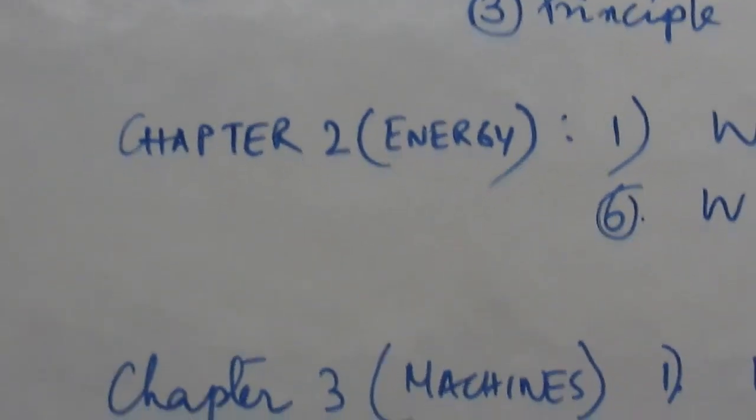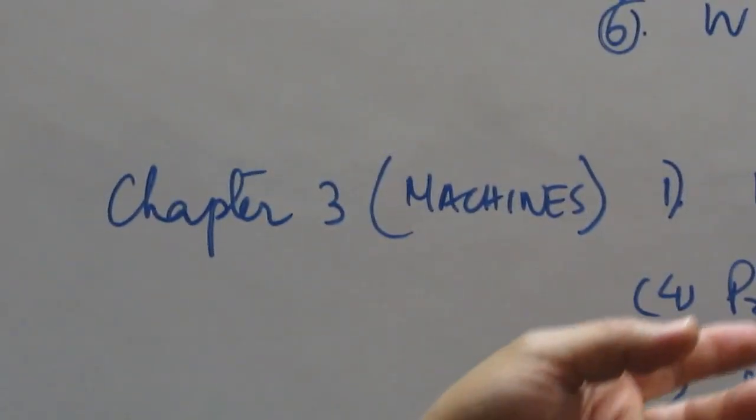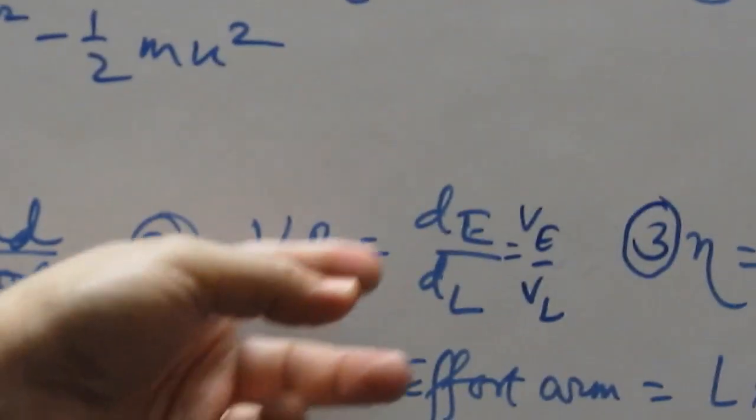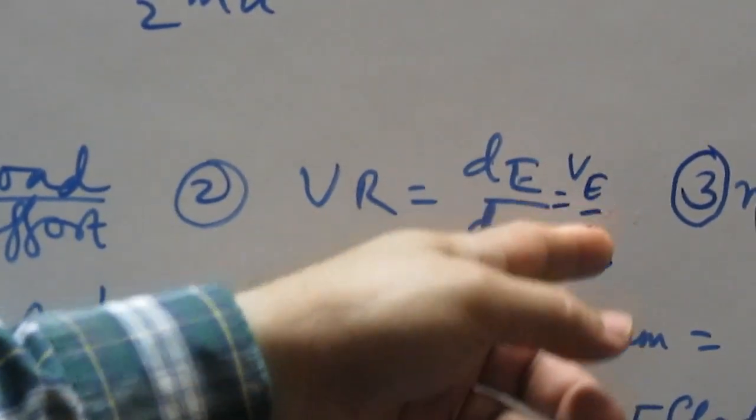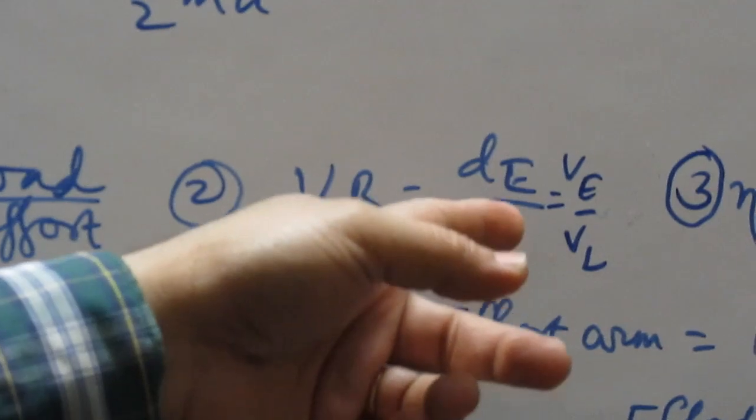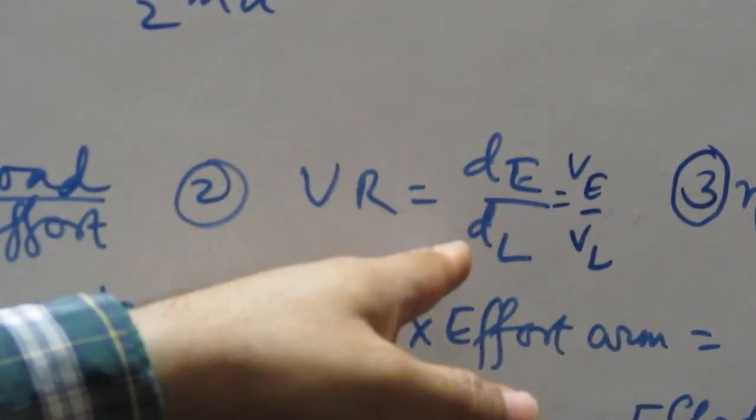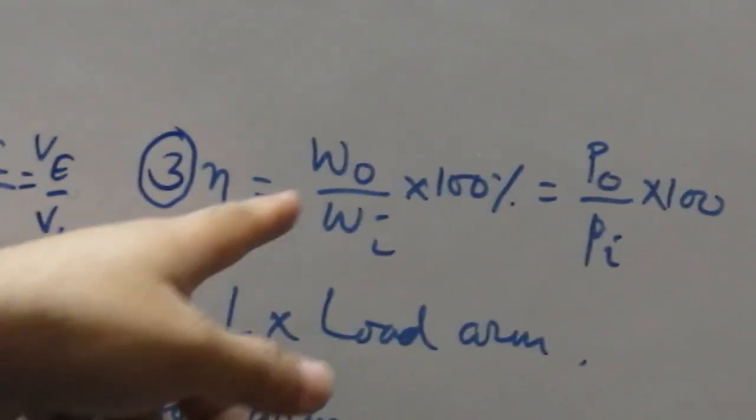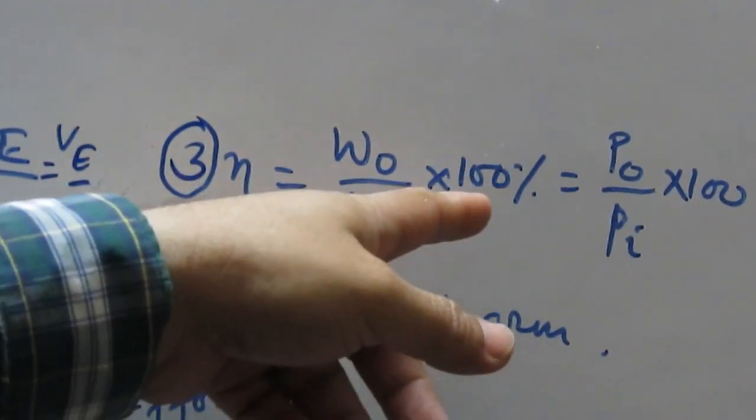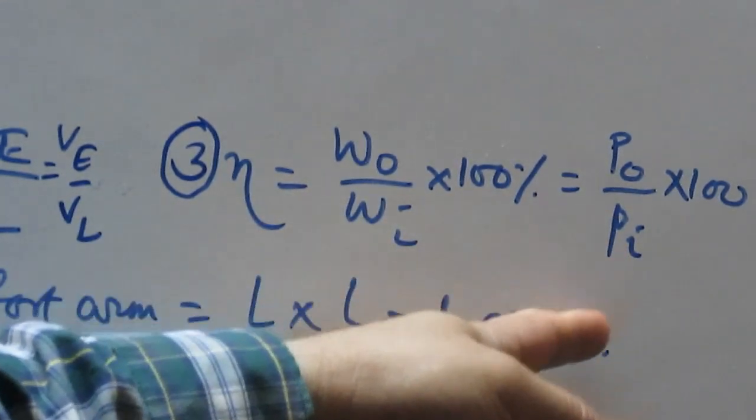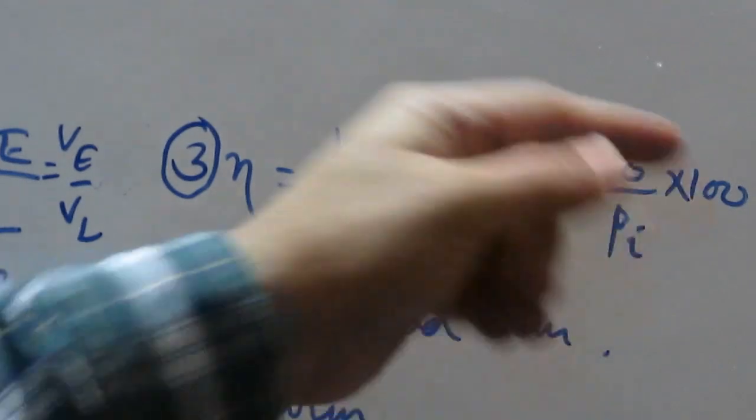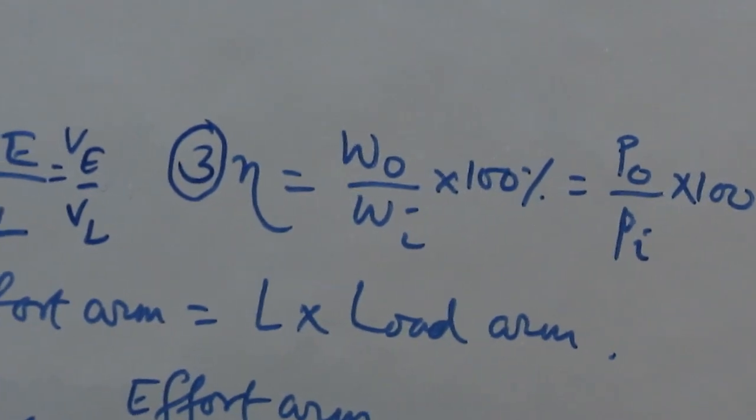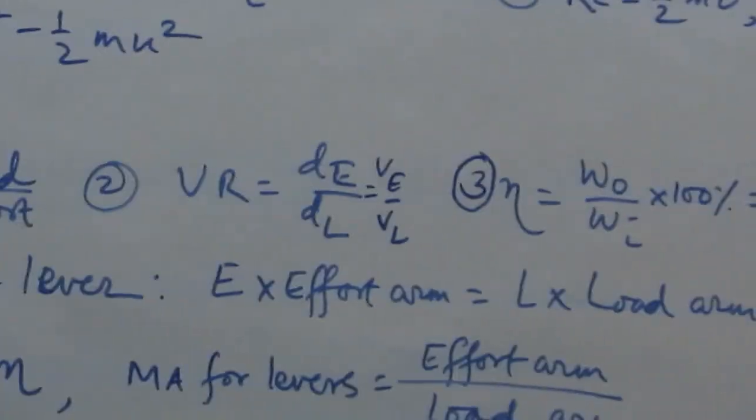After this, machine energy. Numericals are now in chapter 3, machines. Basic formula: mechanical advantage equals load by effort. Velocity ratio, velocity of effort by velocity of load. Time into distance of effort by distance by load. Velocity ratio efficiency: work output by work input into 100, or power output by power input into 100.